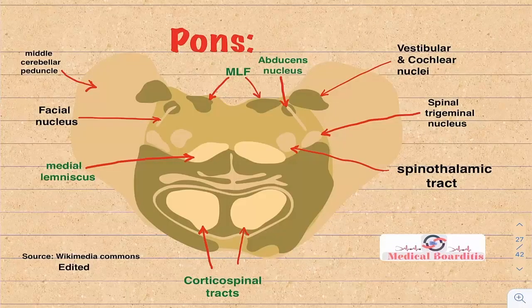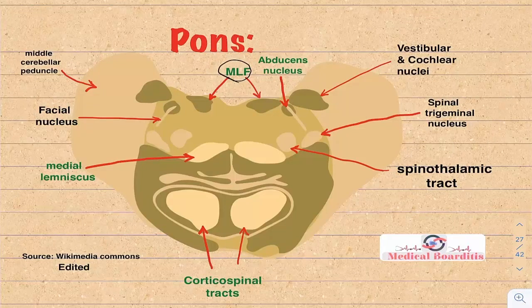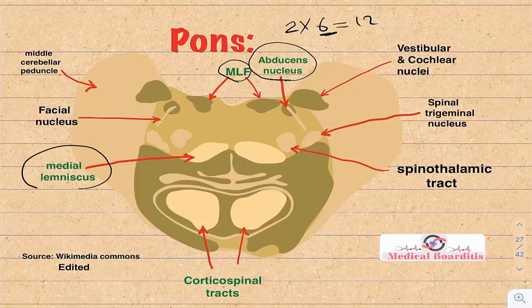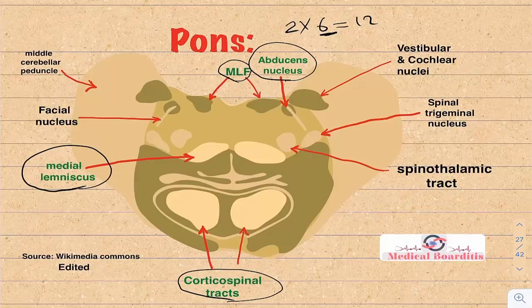Now let's talk about the pons. In the medial pons: the medial longitudinal fasciculus is responsible for conjugate eye movements; the abducens nucleus (cranial nerve 6 — medial by our rule: 2×6=12) controls the lateral rectus causing eye abduction; the medial lemniscus carries vibration, position, and discriminative touch; and the corticospinal tracts carry motor fibers to the spinal cord, with lesions causing spastic paralysis.